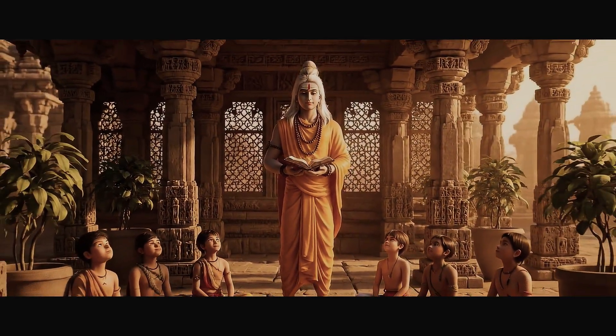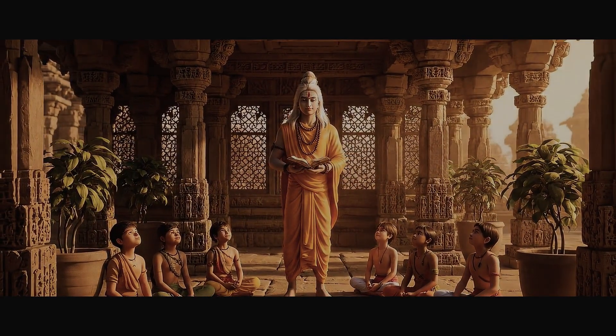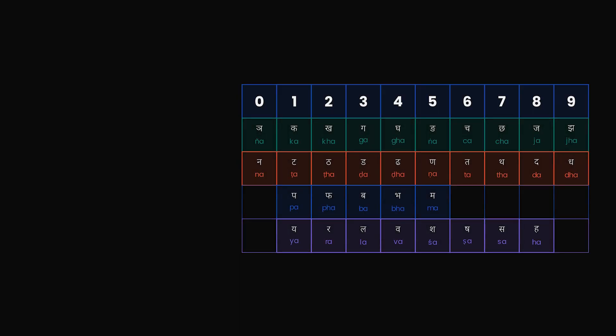So now let's roll up our sleeves and become code breakers for a moment. We take the first chunk of our verse which is Gopi Bhagya. We find the consonants Ga, Pa, Bha, and Ya. We look at our code table.